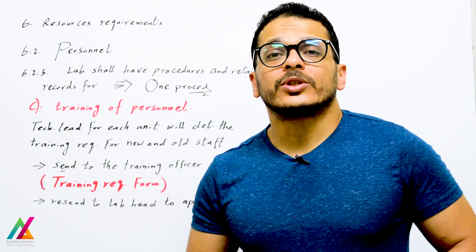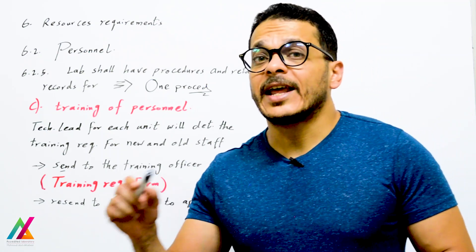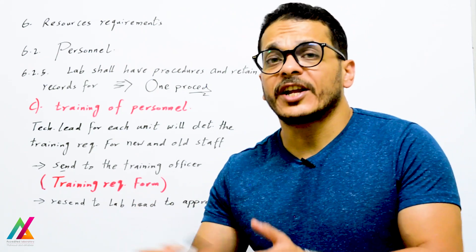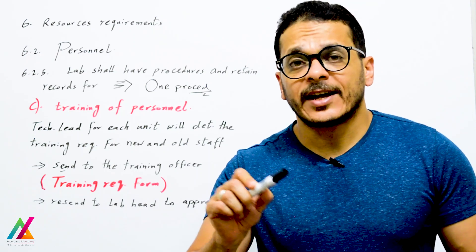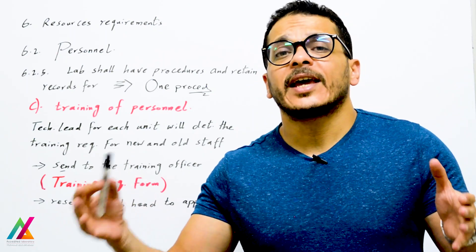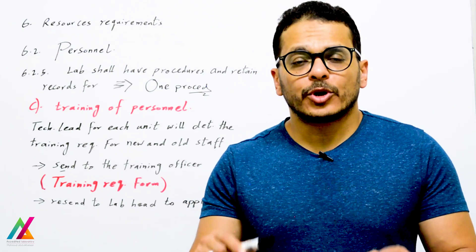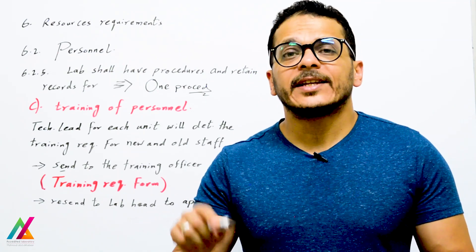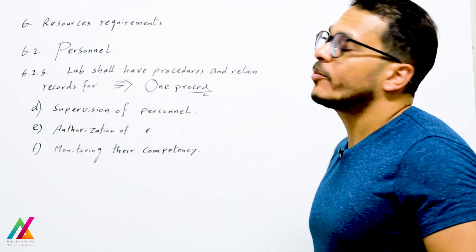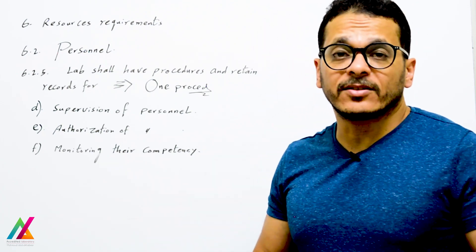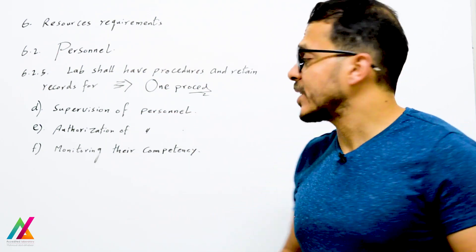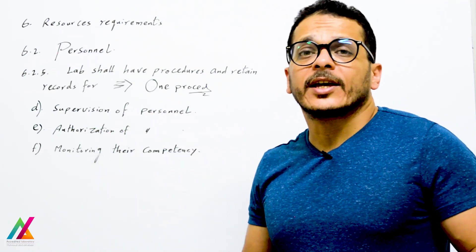The training officer will resend the training request form to the lab head for approval, since the lab may not have sufficient budget for all training. In that case, the lab manager will assign a specific person to provide internal training. All training certificates for each person shall be recorded in their personal file. After training, personnel shall be supervised to ensure they can perform lab activities and obtain valid results.